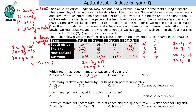How many spinners played in the Australian team? The Australian team has 3 pacers and 4 spinners, so the answer is 4 spinners.